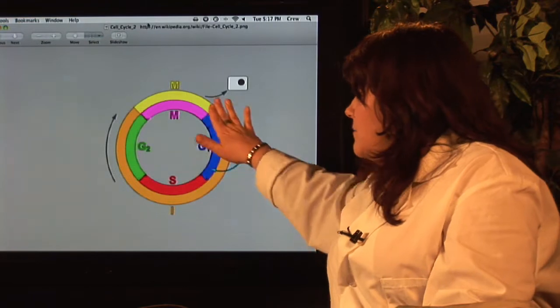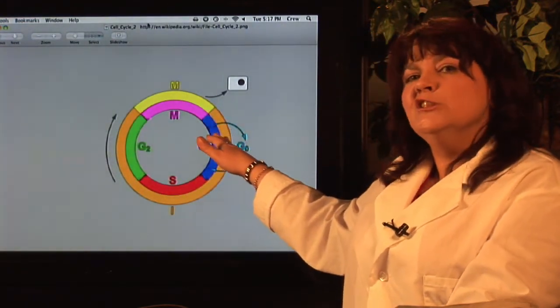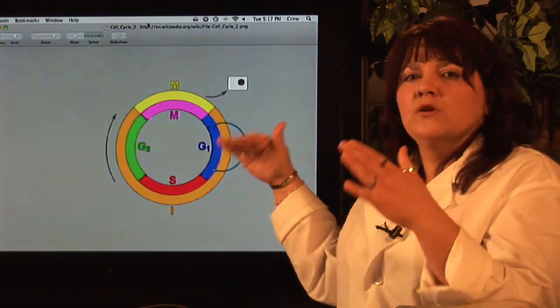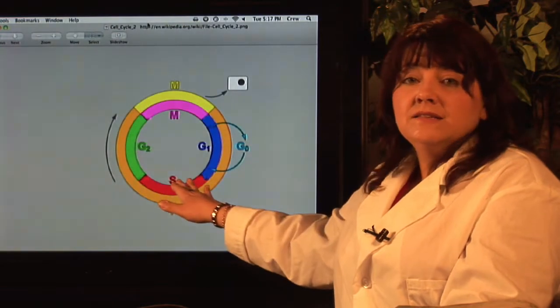These other three components—G1, S, and G2—represent a time when the cell doesn't look like it's splitting, but all the work is actually going on inside. Right here, where it says S, that stands for synthesis.